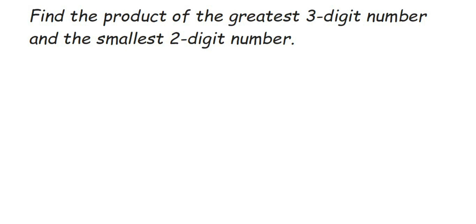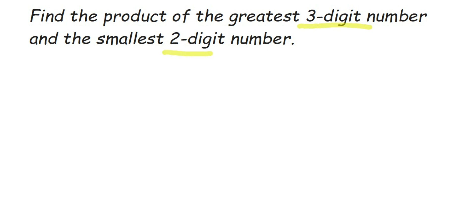Today's question is: find the product of the greatest three-digit number and the smallest two-digit number. They are asking us to find the product, which means multiplying. We have to multiply two numbers: one is the greatest three-digit number and the other is the smallest two-digit number.